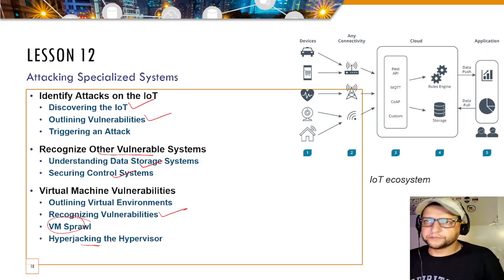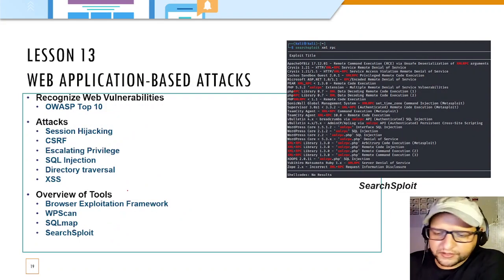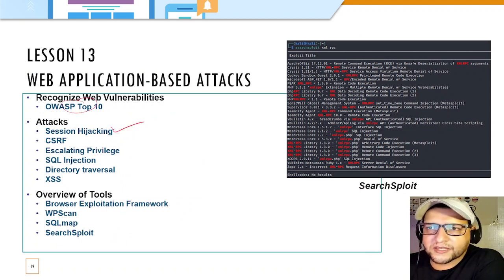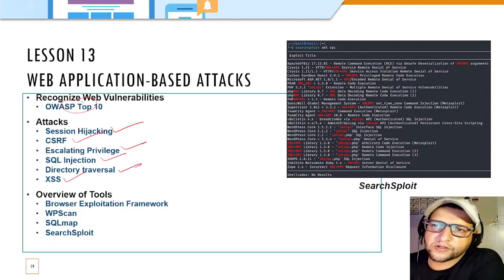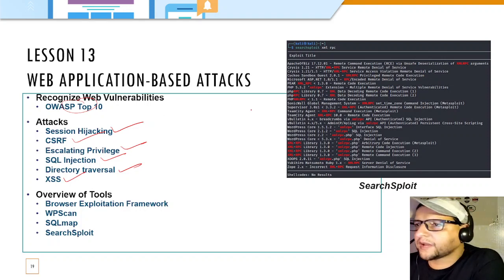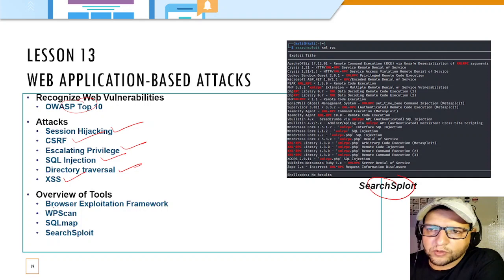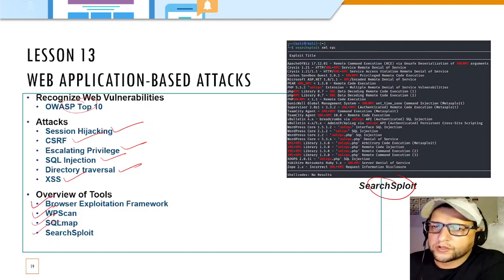Lesson 13 covers web application-based attacks. You'll learn about the OWASP Top 10, session hijacking, CSRF, privilege escalation, SQL injection, directory traversal, and cross-site scripting — common attacks on web applications. Tools used include BeEF, WPScan, SQLMap, and Searchsploit to find and test web application vulnerabilities.